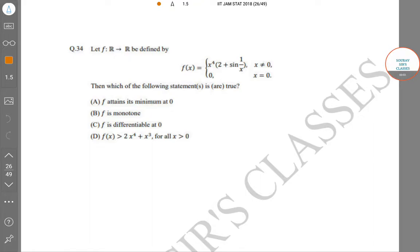Hello students, welcome to Sir's classes. Today we will solve a problem where F from R to R is defined as x^4(2 + sin(1/x)) if x is not equal to 0, and 0 if x equals 0. The conditions to check are: F attains minima at 0, F is monotone, F is differentiable at 0, and F(x) > 2x^4 + x^3 for all x > 0.